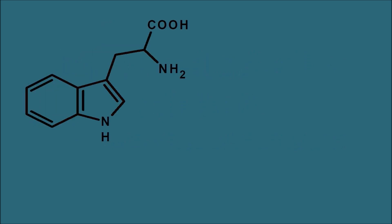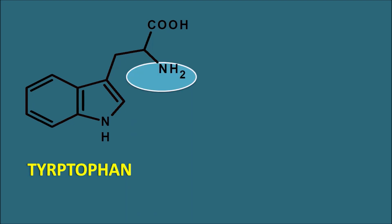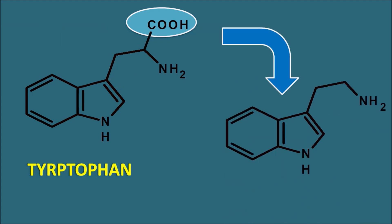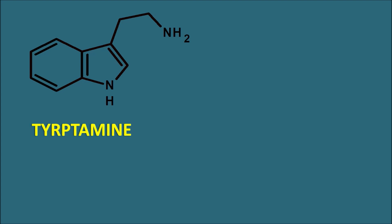Indole alkaloids are obtained from one of the amino acids — a heterocyclic amino acid — which is nothing but tryptophan. Tryptophan is having the indole nucleus, that's why it acts as a precursor for the indole alkaloids. The carboxylic acid of tryptophan is not involved in the biogenesis of alkaloids. Initially, tryptophan undergoes decarboxylation to produce the intermediate tryptamine, which has the indole nucleus along with an ethylamine side chain.